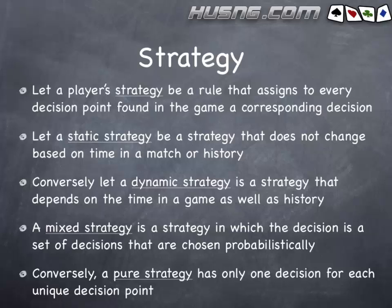A static strategy is one that does not change based on time in a match or history of what's happened. You go into the game with a game plan and it won't change based on what hand number you're at or what's happened in the match. Conversely, a dynamic strategy does depend on time in a non-trivial way — either how long the game's gone or history. For example, always limping on hand four and always min-raising on hand three is a dynamic strategy. Or, whenever you win hand three, you min-raise in hand four — that's also part of a dynamic strategy. A static strategy can't do that.